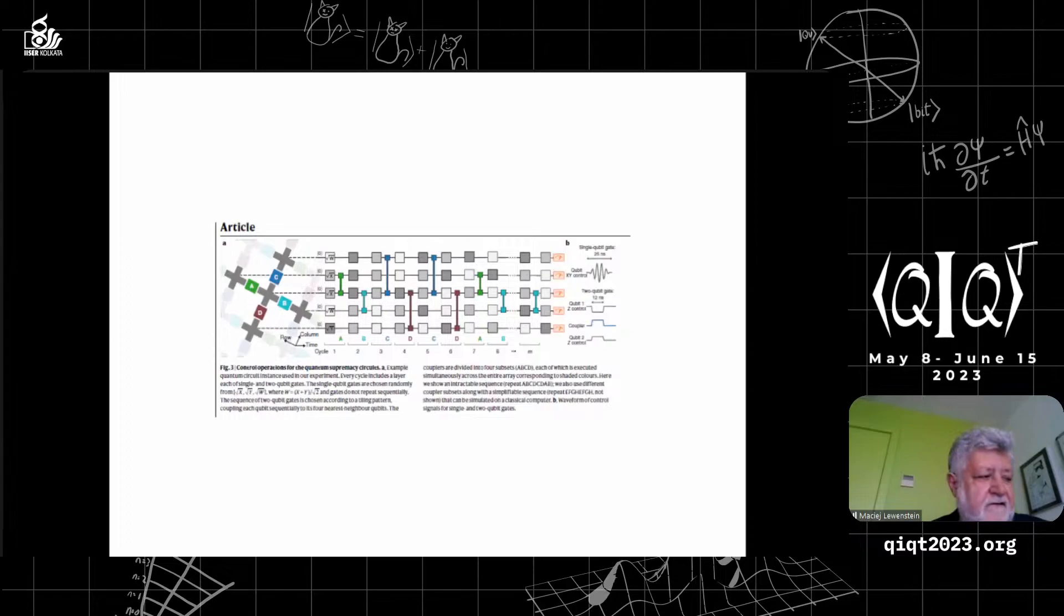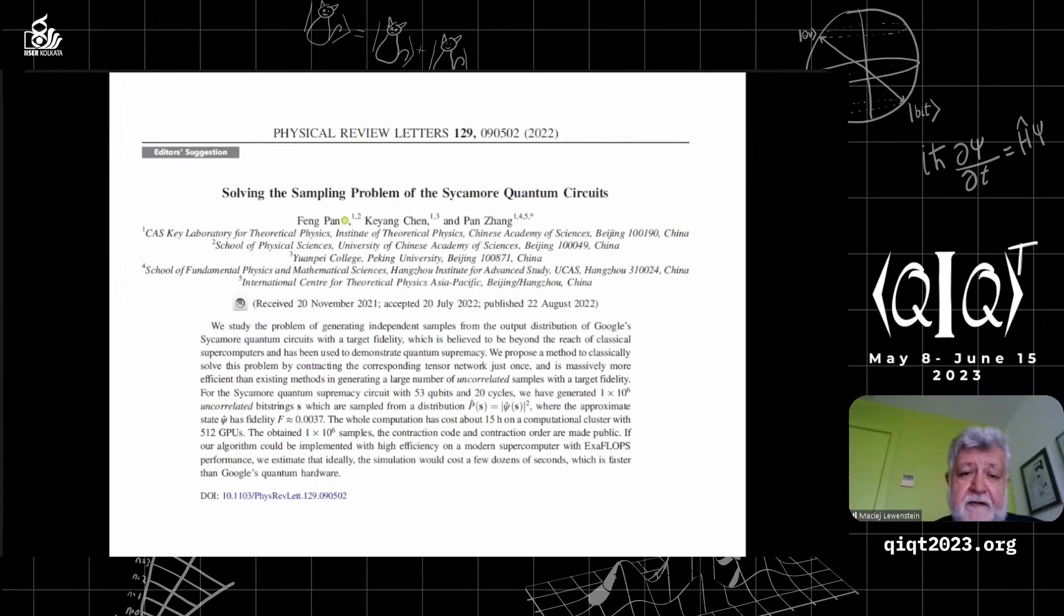This random sampling from random circuits has been proven by Aaronson to be an NP-hard problem for classical computers. The Google team claimed their experiment was years faster, but IBM said it would only be two and a half days longer. The most important thing this experiment stimulated was progress in classical simulation codes, particularly tensor network codes. In August last year, researchers from China beat the Sycamore quantum circuit by doing classical simulations.